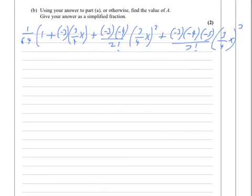Scrolling up then, to give ourselves a bit of space, I'm now going to work out what all of this is. I might as well do it in one go. So we end up with 1/64 times 1. Then 1/64 times -3 times 3/4, which is -9/256 x.